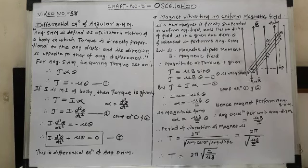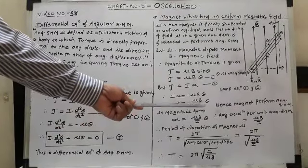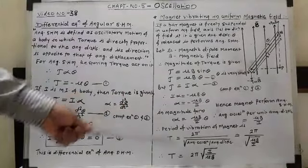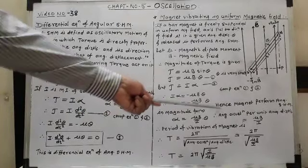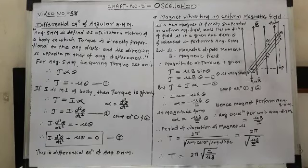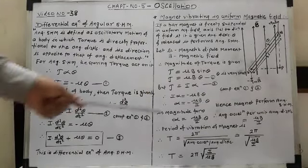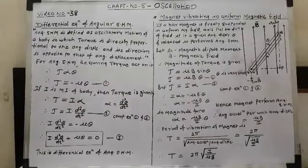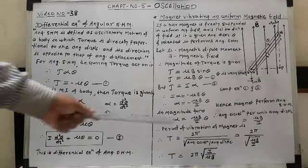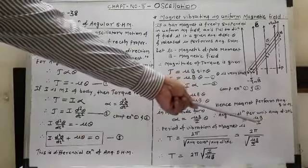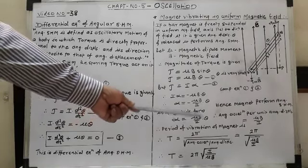In magnitude form, α = (μB/I)·θ. This equation shows that the angular acceleration is directly proportional to the angular displacement and directed opposite to it, confirming that the magnet performs angular SHM. The ratio of angular acceleration to angular displacement is simply μB/I.